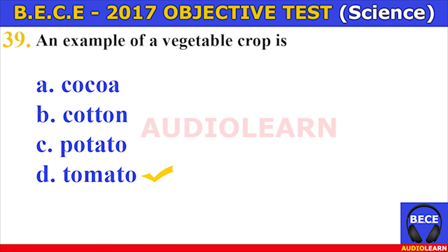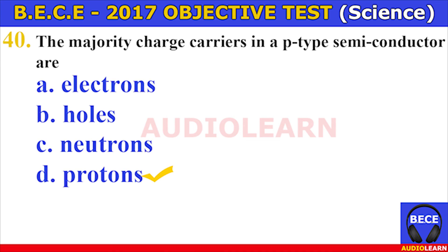Number thirty-eight. Which of the following activities are cultural practices in the cultivation of cabbage? I. Pruning, II. Weeding, III. Watering. The answer is D. All of I, II, and III. Number thirty-nine: an example of a vegetable crop is tomato.